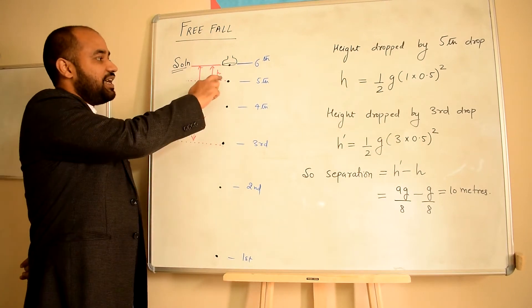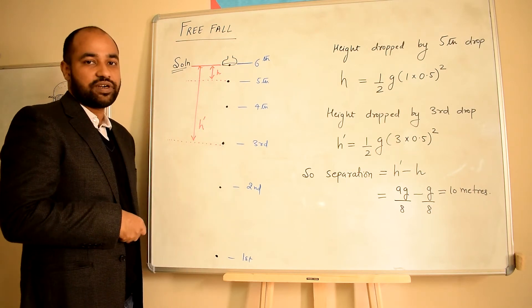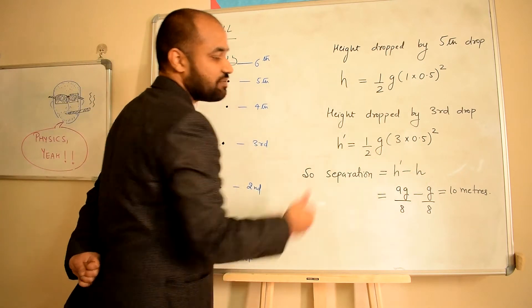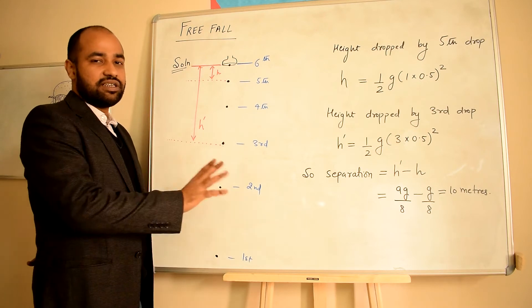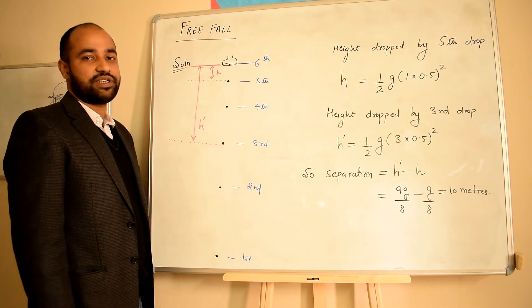We have the question asking for h' minus h. When you calculate h' - h you get 10 meters, assuming g is approximately equal to 10 meters per second squared.